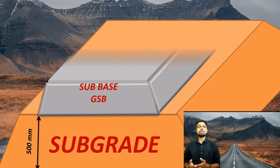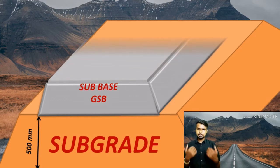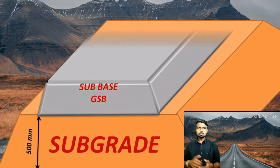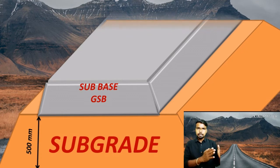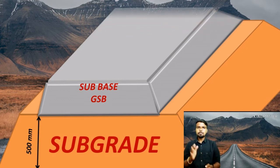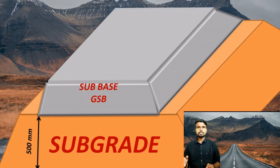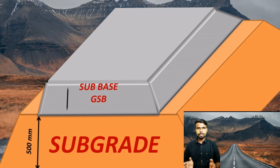Reclaimed asphalt pavement may also be used. The design thickness of the granular sub base is less than or equal to 200 mm. According to design traffic volume, the minimum thickness of the granular sub base layer may be provided: the minimum thickness of the drain layer as well as the filter layer shall be 100 mm each.